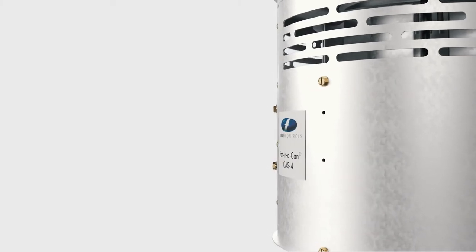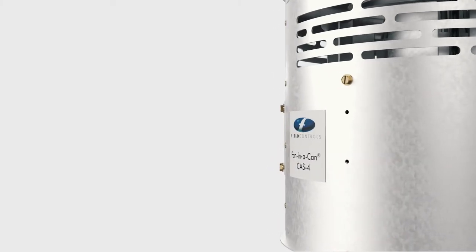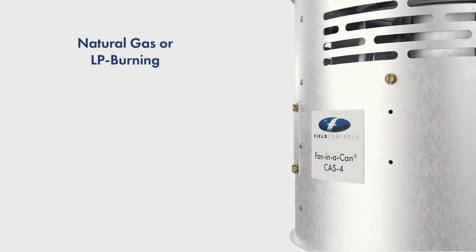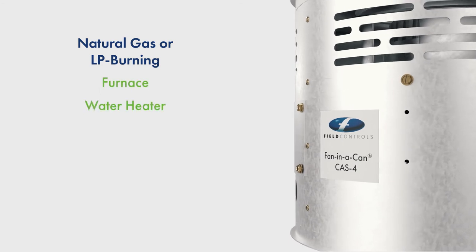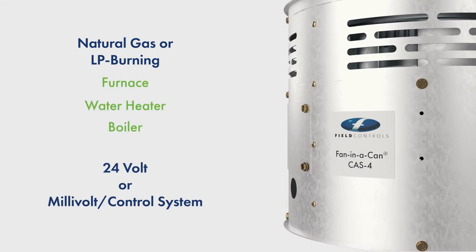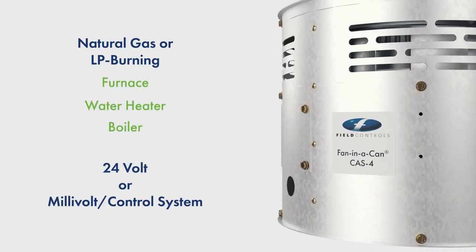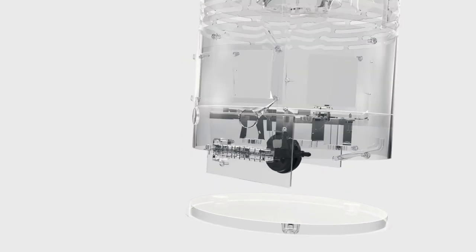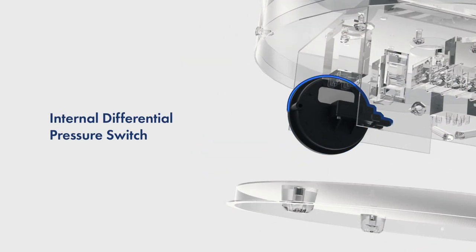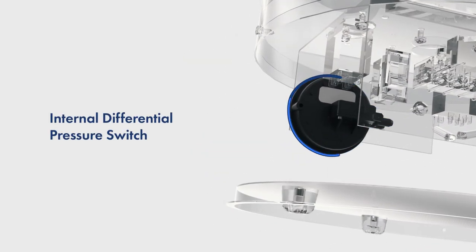The CAS4 can be used with any natural gas or LP burning furnace, water heater, or boiler with a 24 volt or millivolt control system. Both CAS models utilize an internal differential pressure switch.